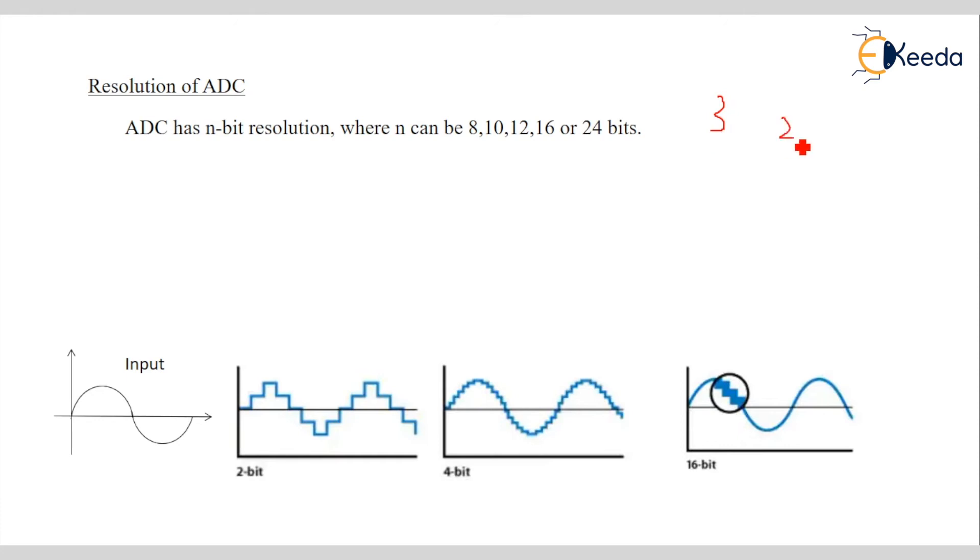So 2 raise to 3 it will give us 8 number of levels. So same thing if 2 raise to 8 is there then it gives 256 combination. If I take 2 raise to 10.